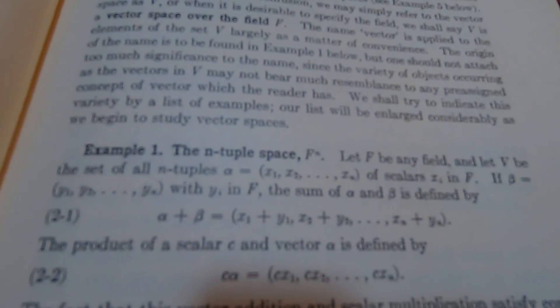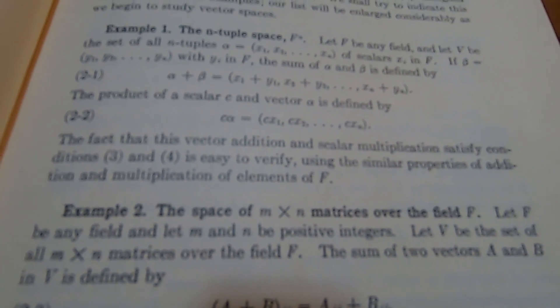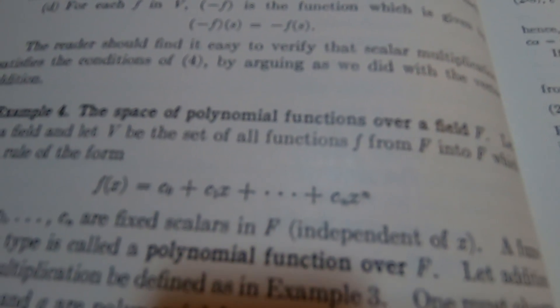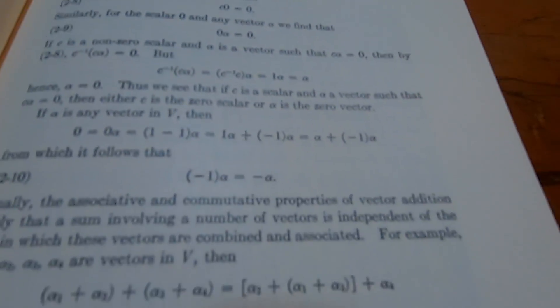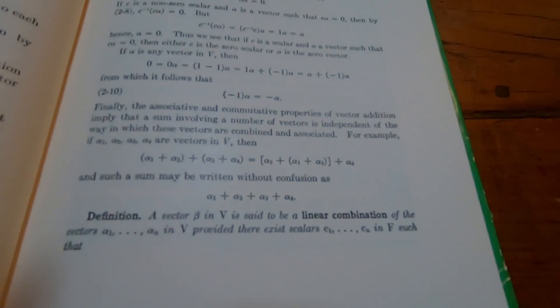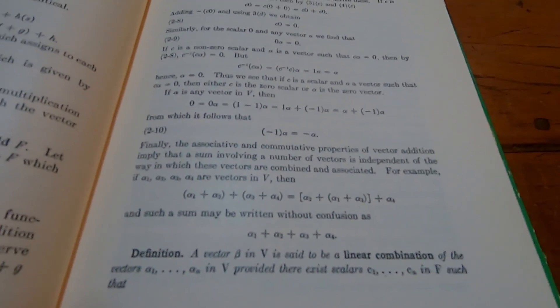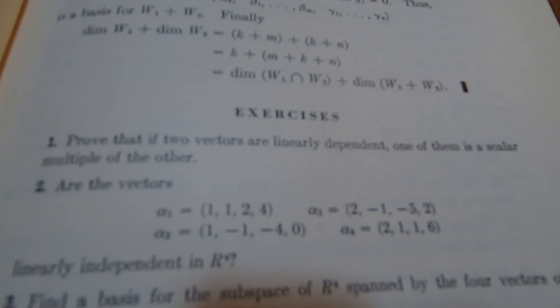Still in the same chapter - he gives all of the usual examples: the n-tuple space, the space of n-by-n matrices over the field F, the space of functions from a set to a field, and the space of polynomial functions over a field F. He also talks a bit about complex numbers and then defines linear combinations. It's a very standard treatment. I believe this was the linear algebra book for math majors back in the 60s - a very popular book.